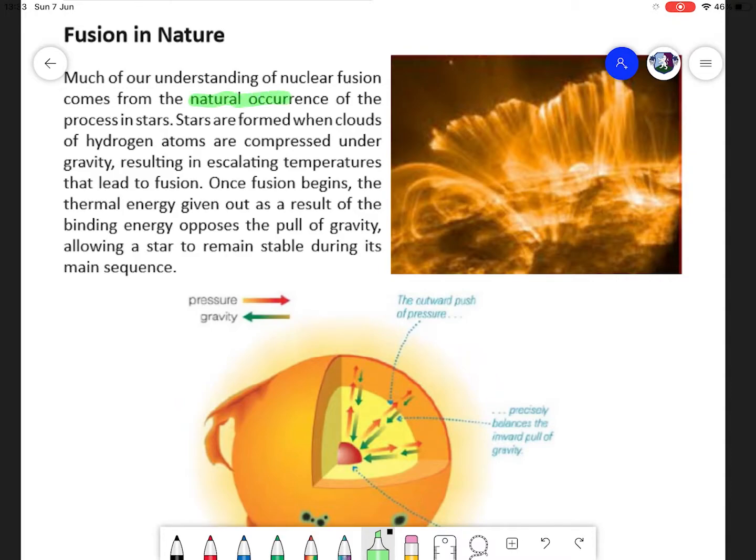You can see an image of a very small amount of plasma being tested, but we still haven't done it on a large scale. This is all based on our knowledge from the natural occurrence of fusion, which is in stars.